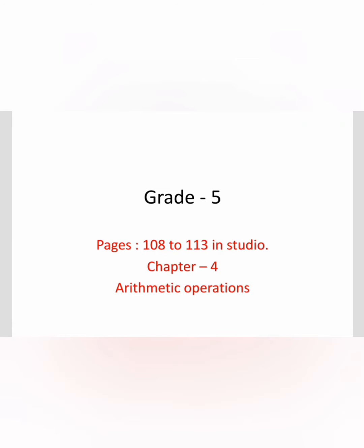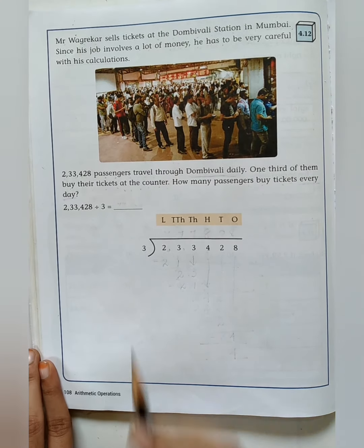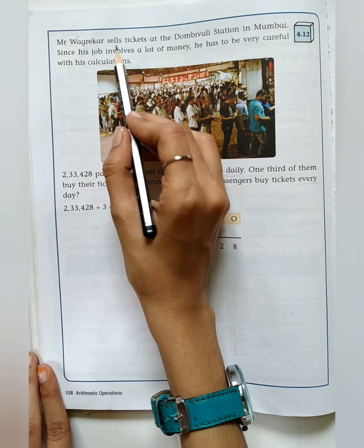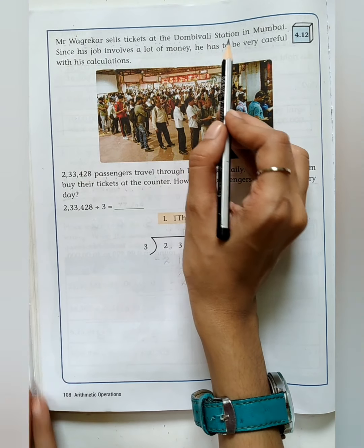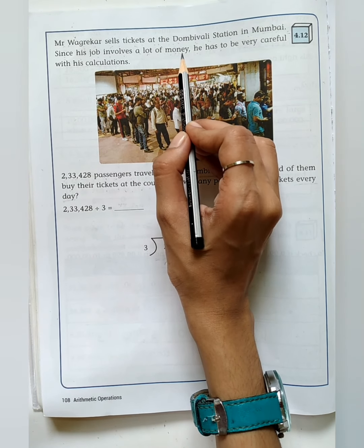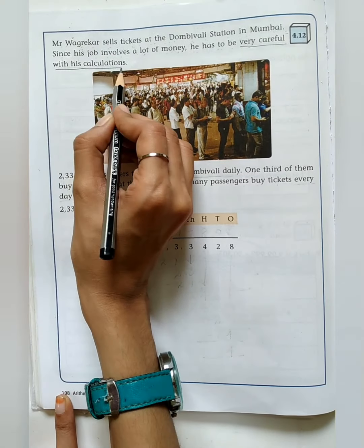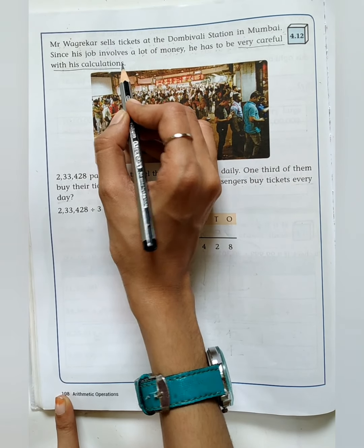Hello grade 5 children, in today's session we are going to see pages 108 to 113 in your studio book. Take page number 108 and see problem 4.12. Read out the question: Mr. Wagrikar sells tickets at the Dombivali Station in Mumbai. Since his job involves a lot of money, he has to be very careful with his calculations.